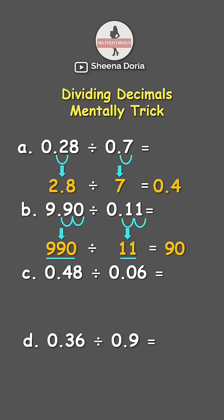Next we got 0.48 divided by 0.06. The same thing we need to make 0.06 a whole number. So let's move the decimal point two times. Now 0.06 becomes 6.